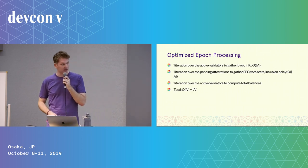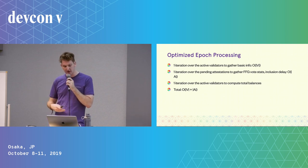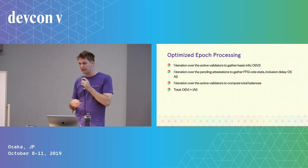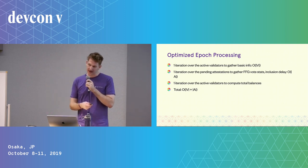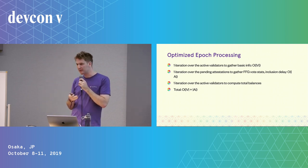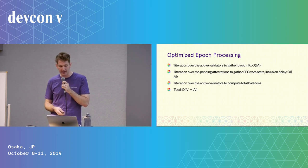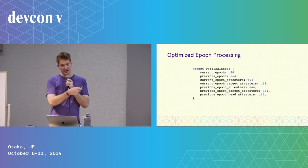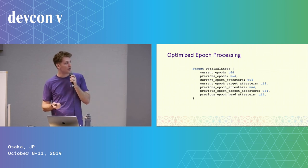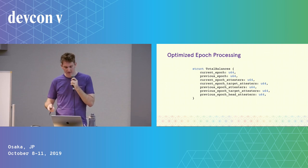Rather than that quadratic time approach, in Lighthouse what we do is just a linear pass over the validators and attestations. We do it in three parts: first we go over the validators to get basic info like whether they're active in the current epoch; then we iterate over the attestations to find out how people voted — whether they voted on the correct Casper FFG targets and sources; and then we do one final pass to sum up balances. In total that's O(V + A) time. The totals we compute include the total balance of all active validators in the current epoch, all validators who attested, who attested to the correct target, and so on.